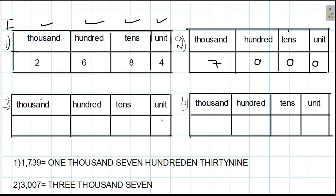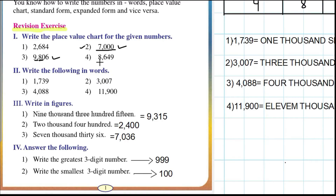For 9806: six in the place of units, zero in the place of tens, eight in the place of hundreds, and nine in the place of thousands — so nine thousand eight hundred and six.